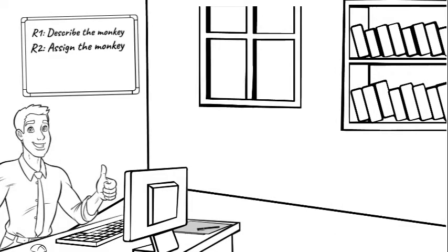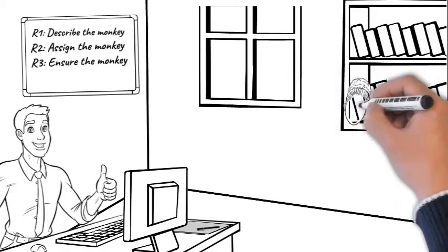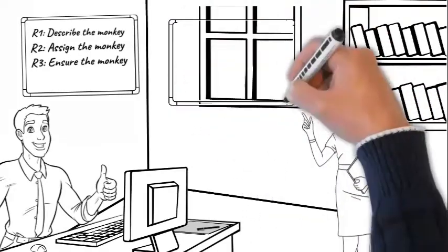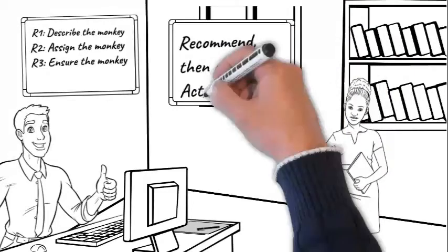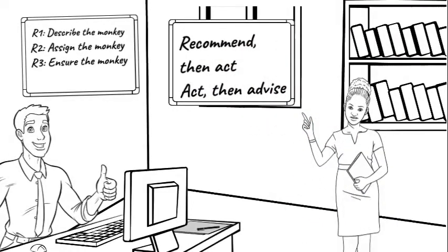Rule number three. Ensure the monkey. Every monkey leaving your presence on the back of one of your people must be covered by one of two insurance policies. Recommend, then act. Act, then advise.